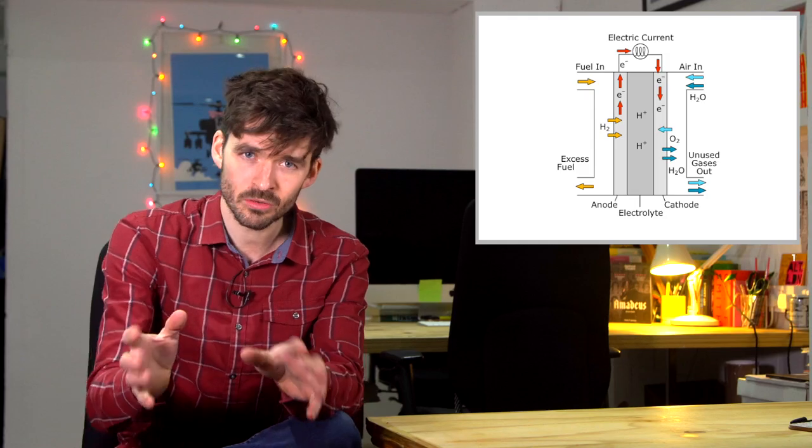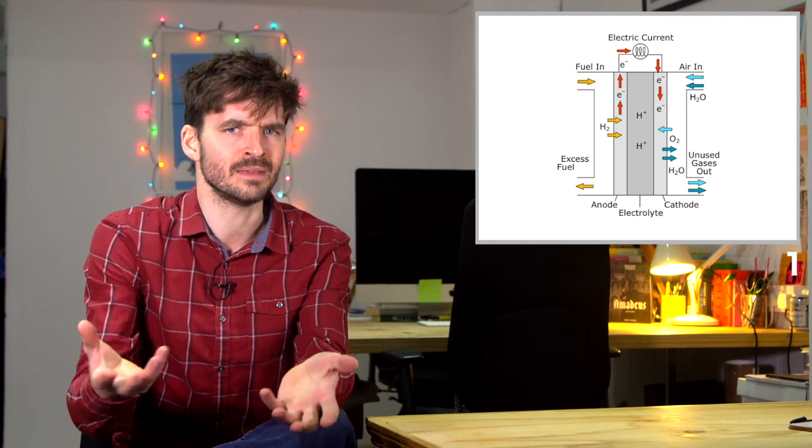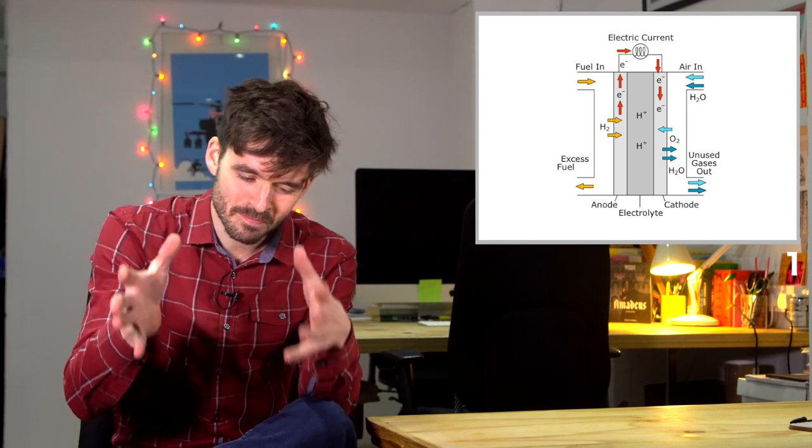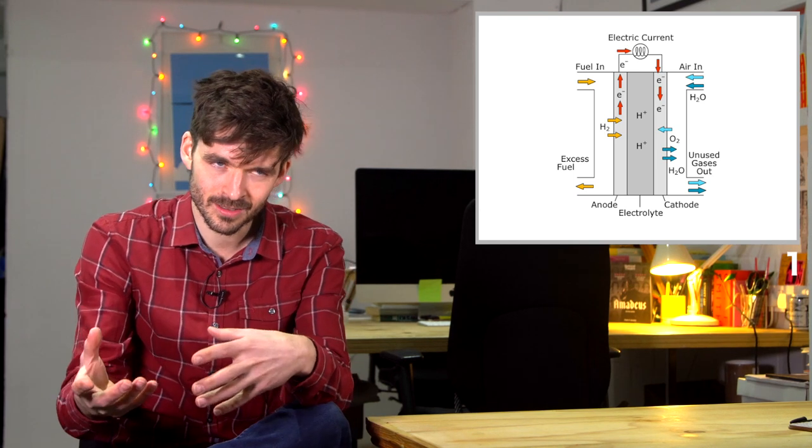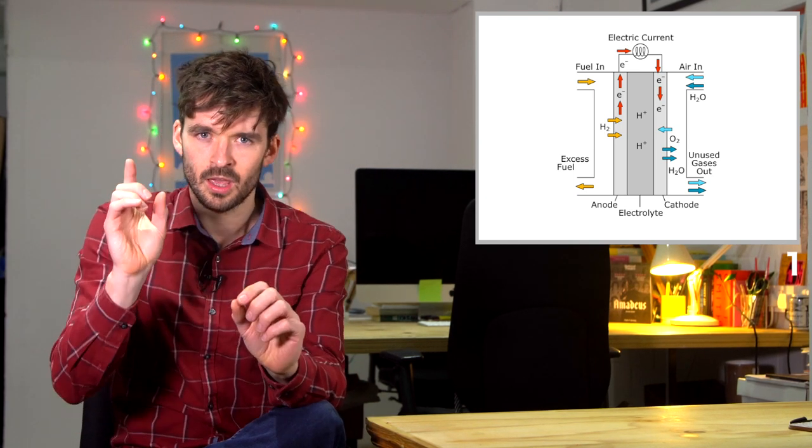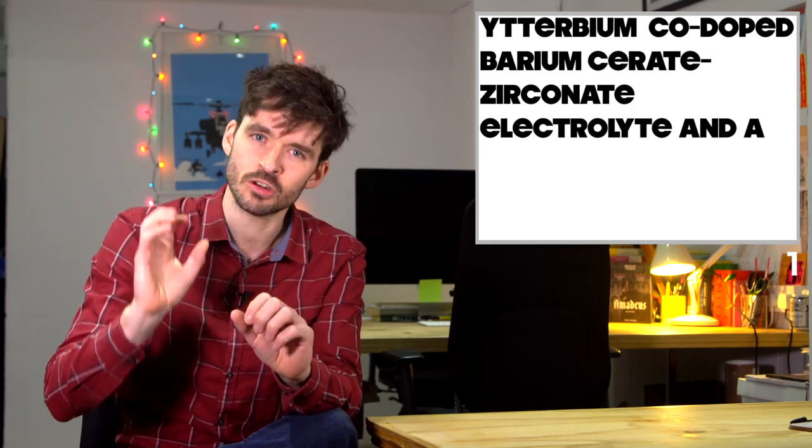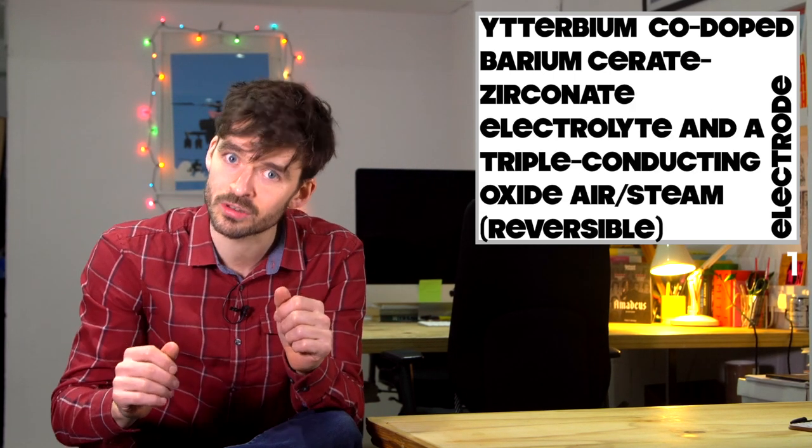They use electricity to turn water into hydrogen gas, which can then be stored in large amounts for a long time. That hydrogen can be turned back into electricity by using a fuel cell. Now normally, you would need two bulky bits of kit to do this. But new research out this month has managed to combine the two steps by using an ytterbium co-doped barium serate zirconate electrolyte and a triple-conducting oxide air steam reversible electrode.